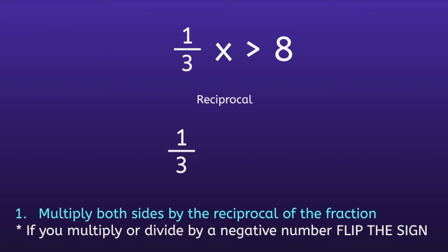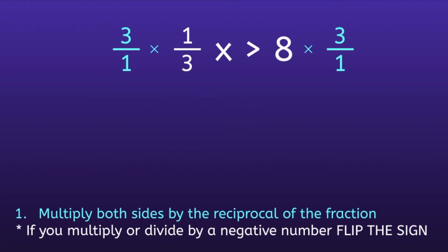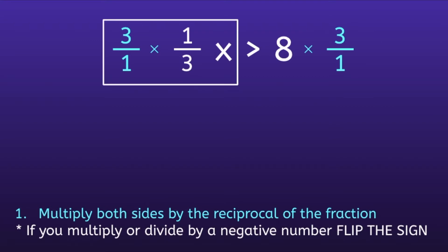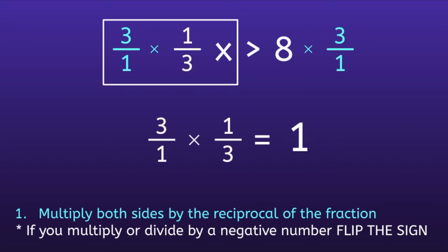Reciprocal is when you take a fraction, but you switch the numerator and denominator. So the reciprocal of 1 third would be 3 over 1. So I'm going to multiply both sides by 3 over 1. If I focus on the left side, I have the fractions 3 over 1 times 1 over 3. If I pull those out, 3 over 1 times 1 over 3 is equal to 3 over 3, or 1. And any time you multiply reciprocals, you will always get the number 1.